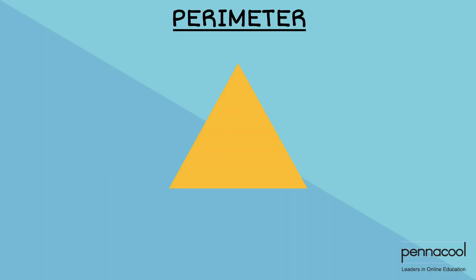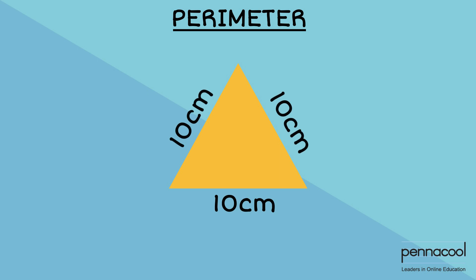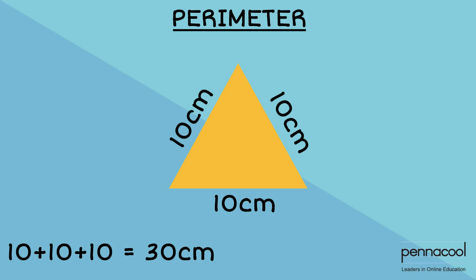Finding the perimeter of regular shapes can be very easy. If we have an equilateral triangle with sides of length 10 cm, we can add 10 cm 3 times, or we can multiply the length of the side by 3.